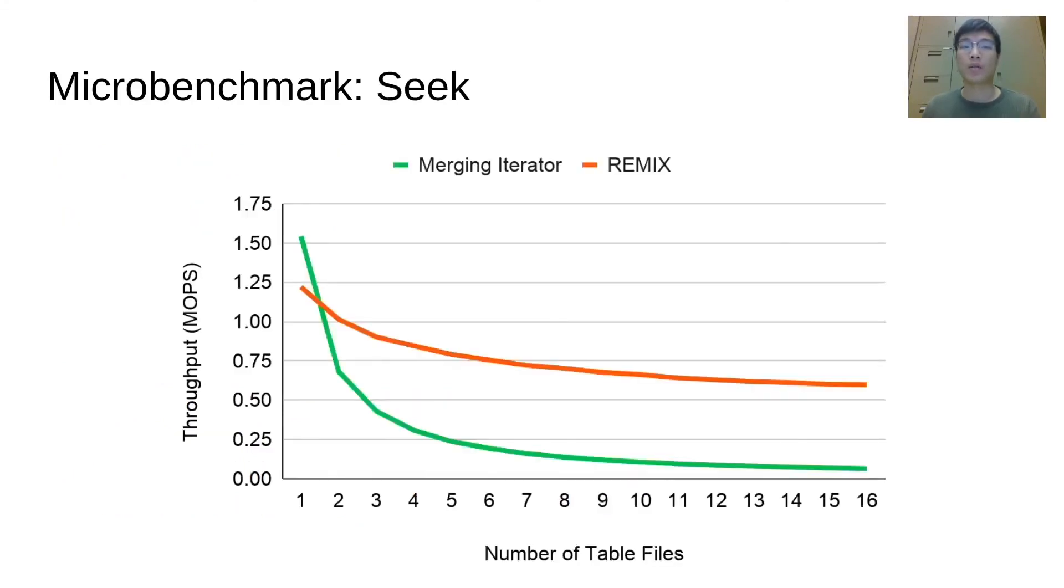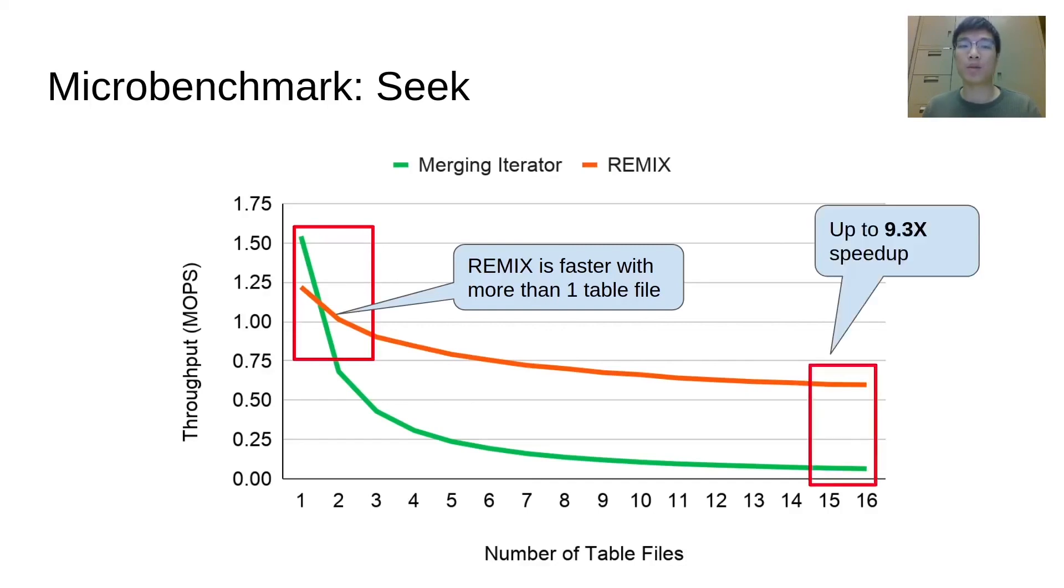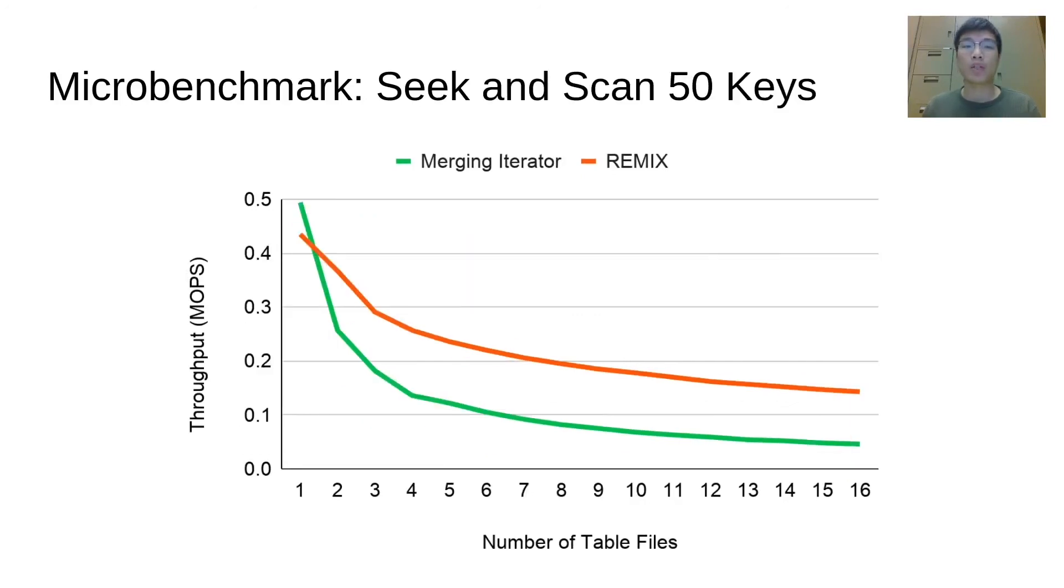Here is the seek operation result. When there is only one table file, both methods use one binary search, while Remix has slightly higher constant overhead. Remix is faster than merging iterator when there are more than one table file, as the merging cost starts to dominate. Remix achieves up to 9.3 times speedup when there are 16 table files. Here we show the result of a seek operation, followed by scanning the next 50 keys. The scanning imposes a constant overhead on copying the keys. In this scenario, Remix still achieves about 2 times speedup with 5 table files, and up to 3 times speedup when there are 16 table files.